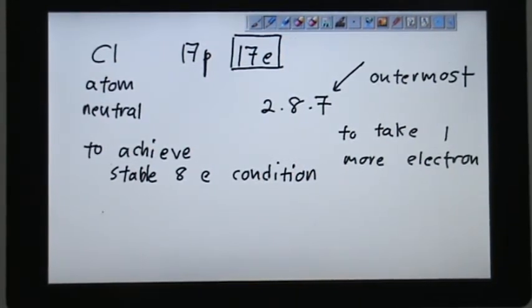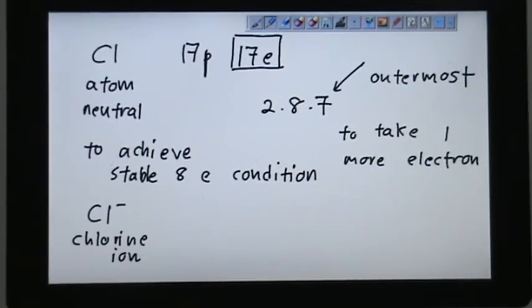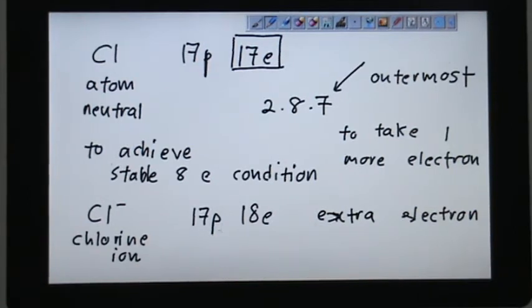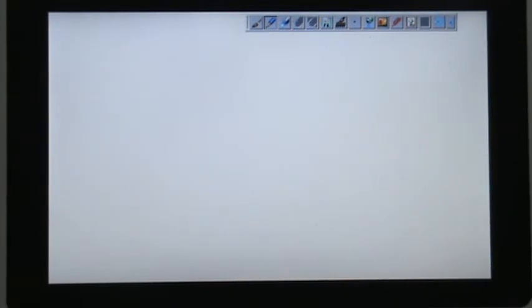Here, Cl negative, chlorine ion, has 17 protons and 18 electrons. It has one extra electron. This extra electron makes chlorine a negative ion. So this negative ion has more electrons than protons.